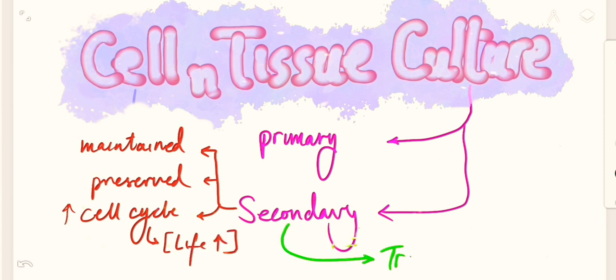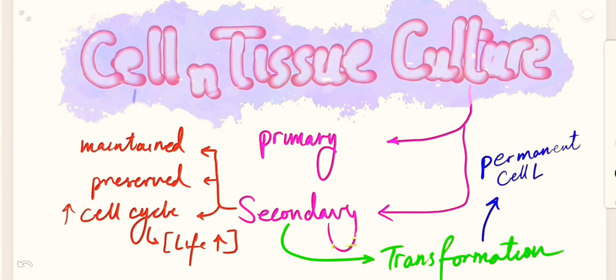This secondary method is also called transformation and through transformation a permanent cell line will be achieved. This achievement is often happened by the actions of the oncogenes.